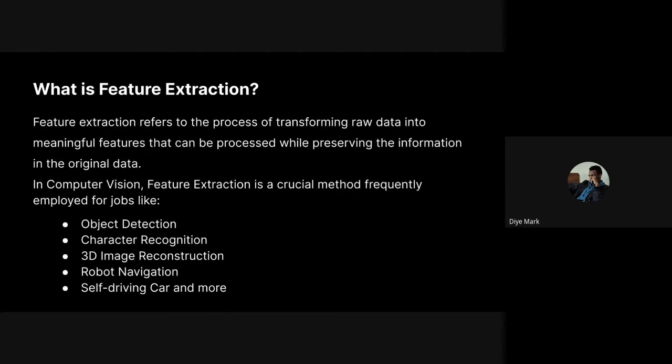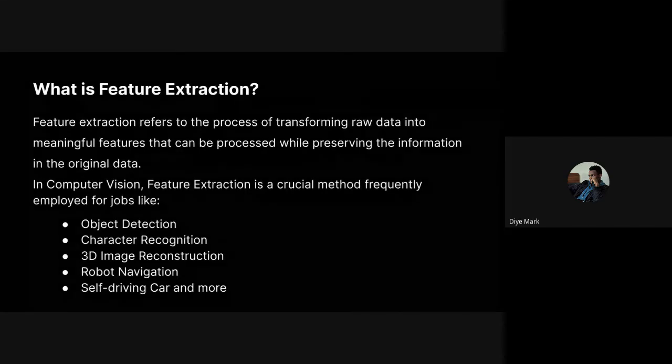Feature extraction is a kind of dimensionality reduction process where the initial raw data is transformed into more manageable groups. It's a process of transforming raw data into meaningful features while preserving the information in the original dataset. It also reduces the size of an image or any feature to make it more manageable.